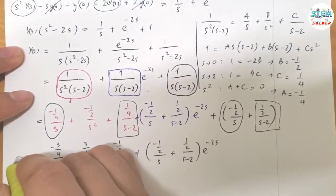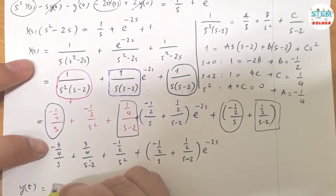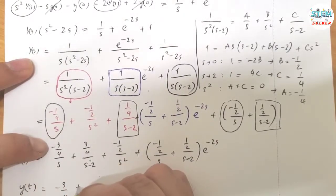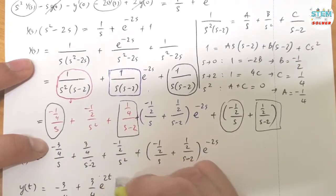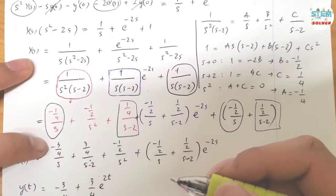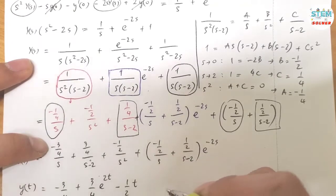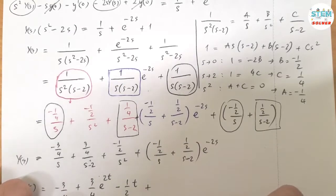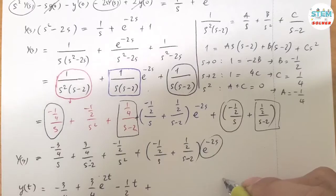Now let's take the L inverse on both sides. So I have negative 3 fourths plus 3 fourths E to the 2T minus 1 half T. Plus. So let's do this first. That is U of T minus 2.